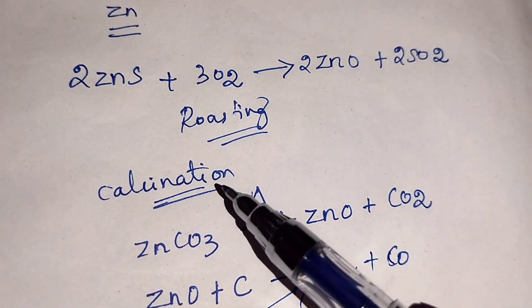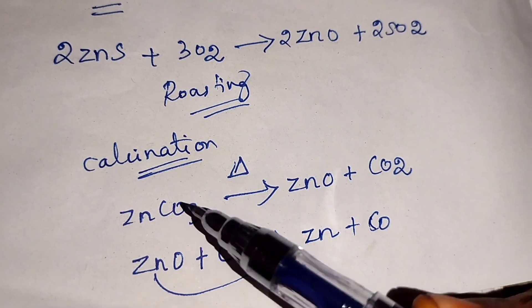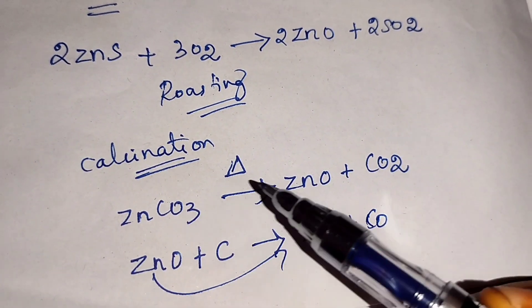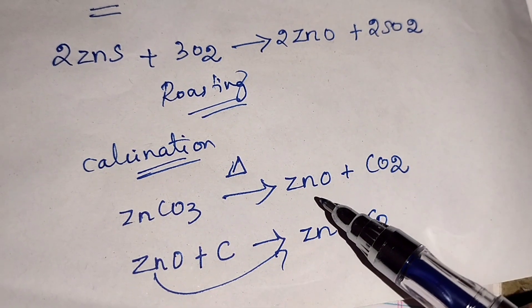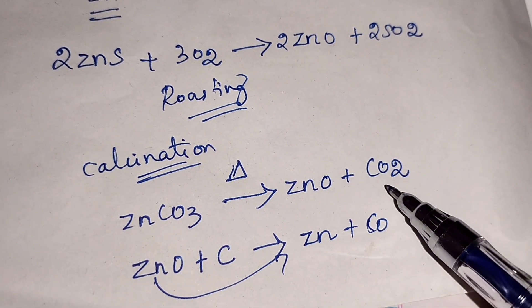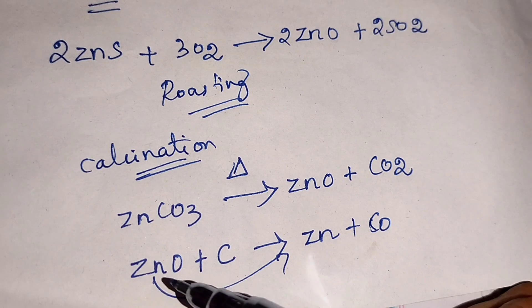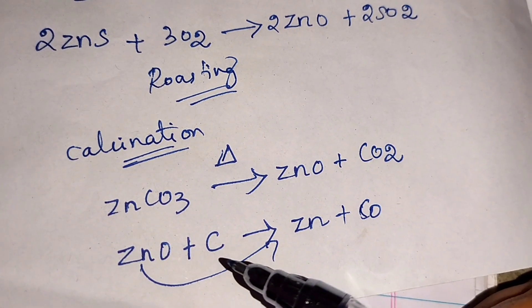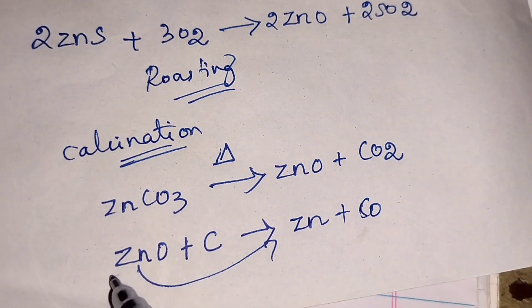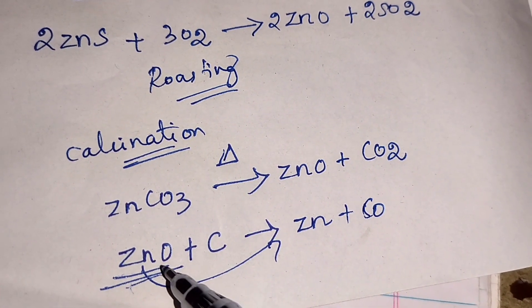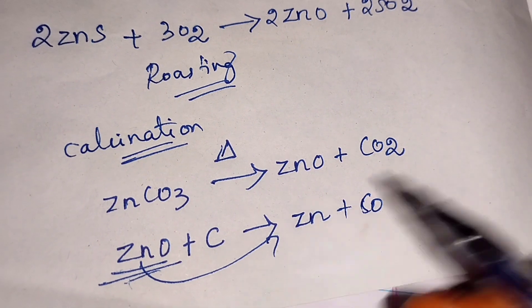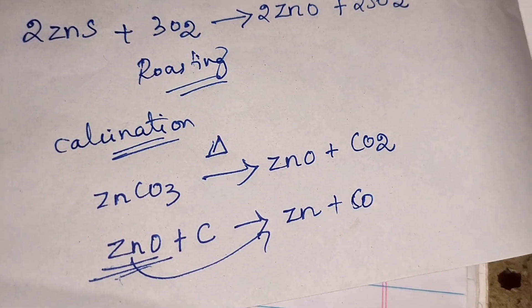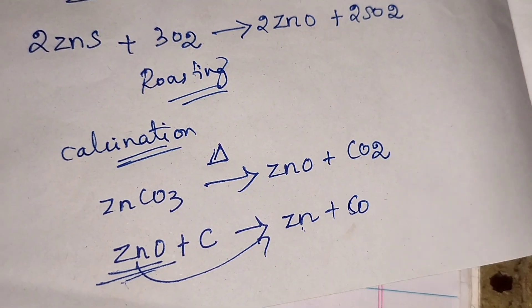So calcination process means the metal is in carbonate form. Zinc carbonate is taken and heated; it is converted into zinc oxide with CO2 liberated. Then zinc oxide is reacted with carbon, which is a strong reducing agent, to extract the metal from its oxide. We get zinc and carbon monoxide. Carbon is used to reduce the metal.